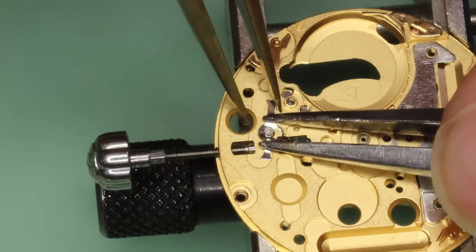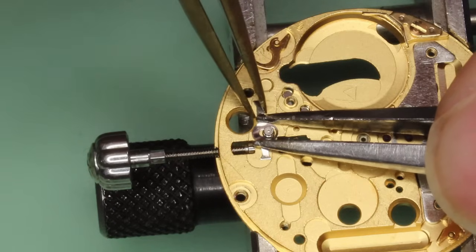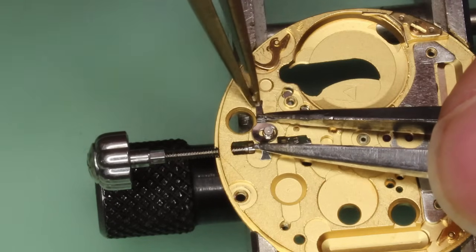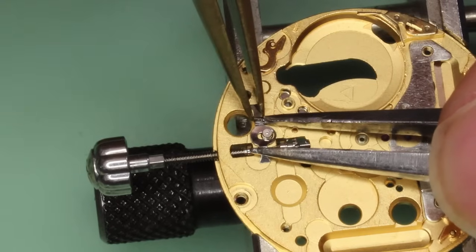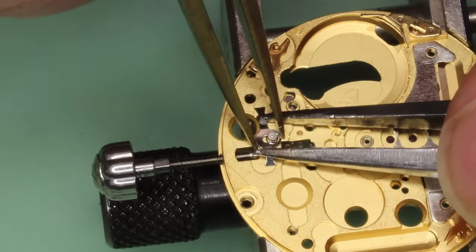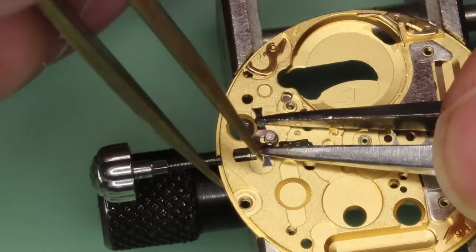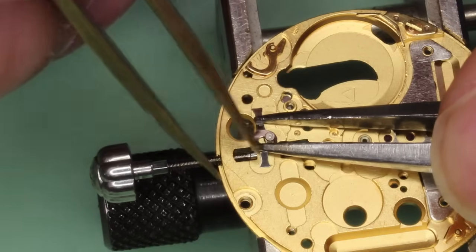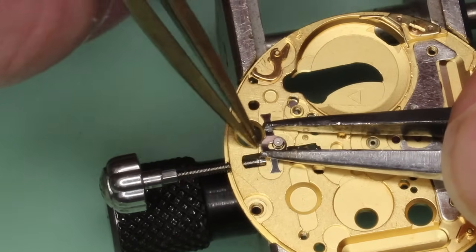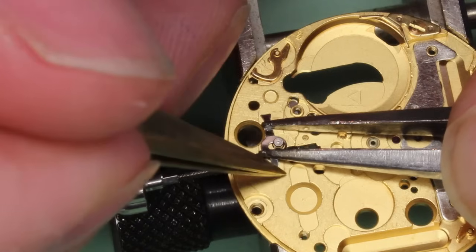This is the retaining clip for the bolt piece. Be careful with this one, it can ping off quite easily once you have released it. As you can see I am using two pairs of tweezers so it doesn't ping across the room.